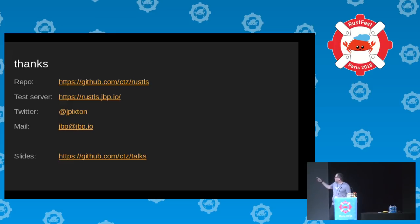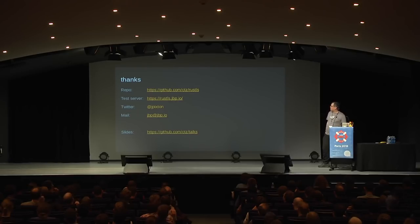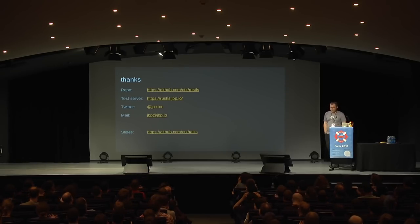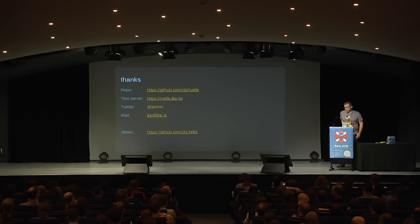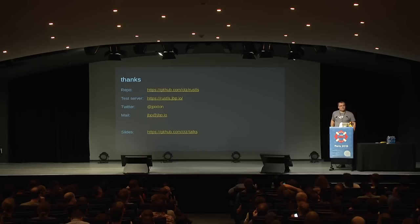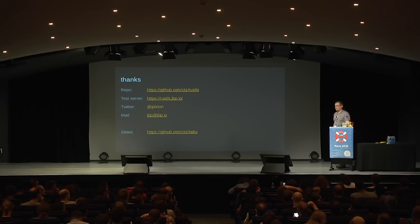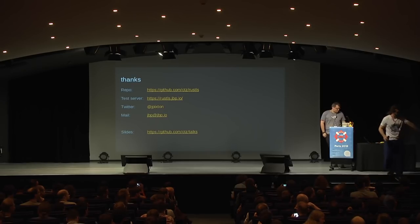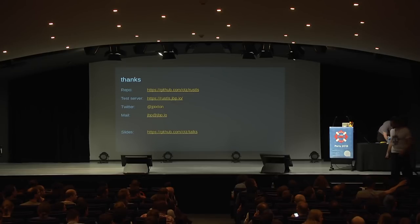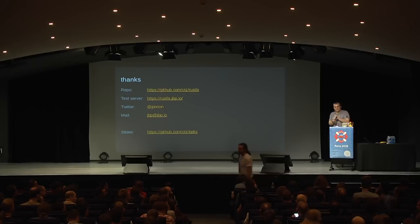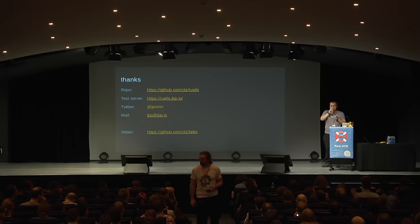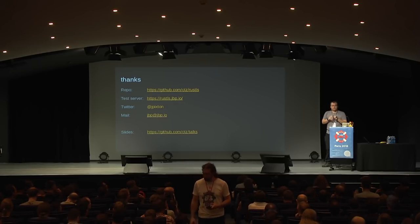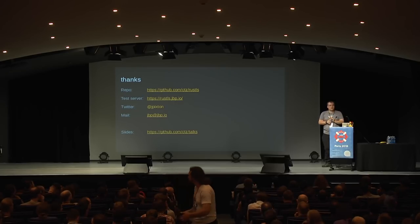That's the talk — the repo, slides, and a test server are available. During Q&A, someone asked about the 'safe subset of Rust' mentioned earlier. The answer: it simply means no unsafe blocks in the crate — though dependencies may have unsafe blocks internally.